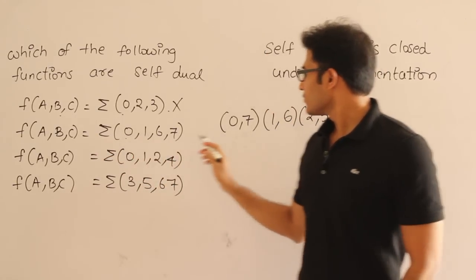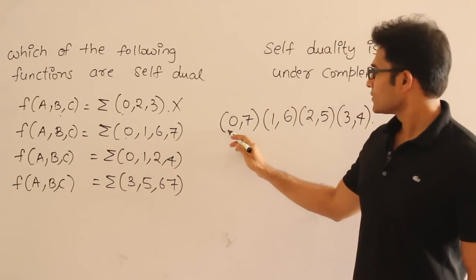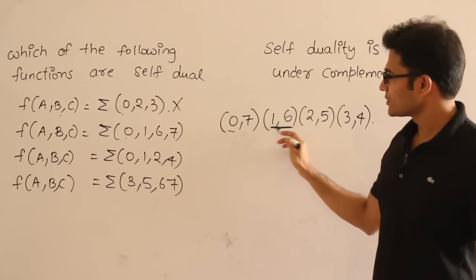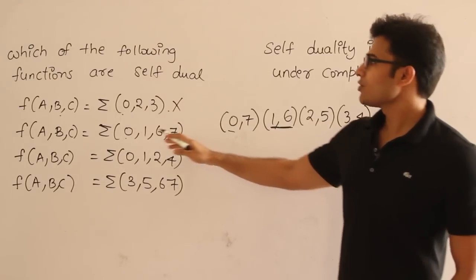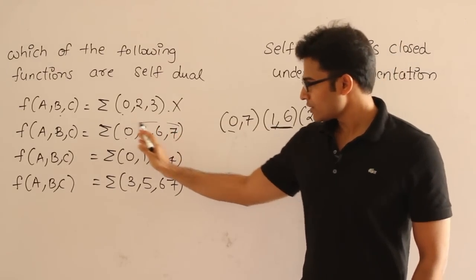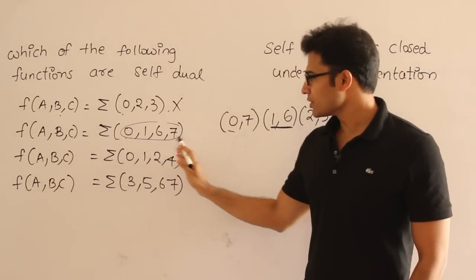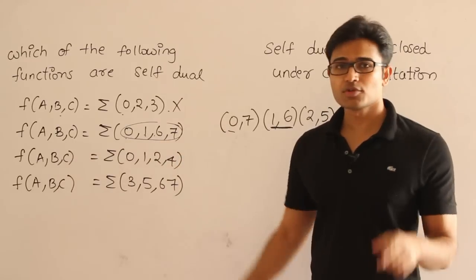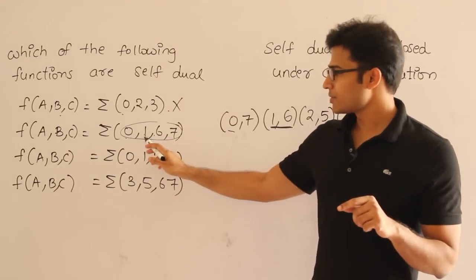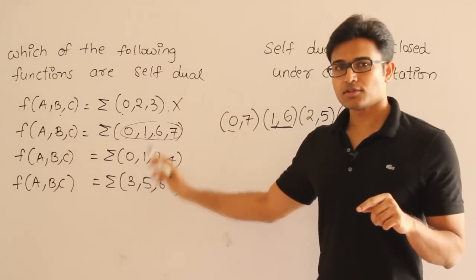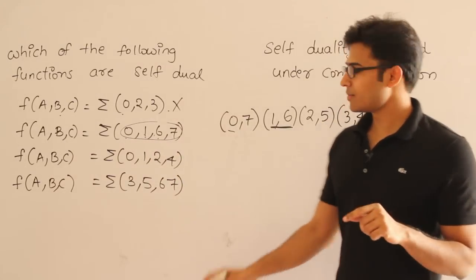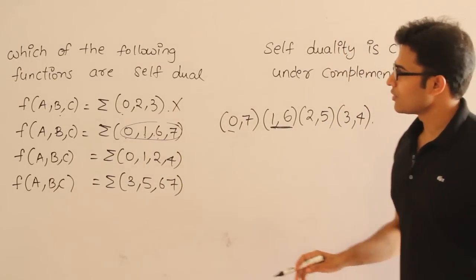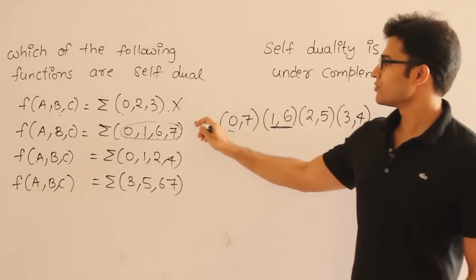Looking at the second option: minterm 0 is chosen, but then both 1 and 6 are chosen. Even though it may be a neutral function with 4 minterms, no two mutually exclusive terms are supposed to be both present. If 1 is present, 6 should not be — but both 1 and 6 are present in this set. Therefore it is not self-dual.